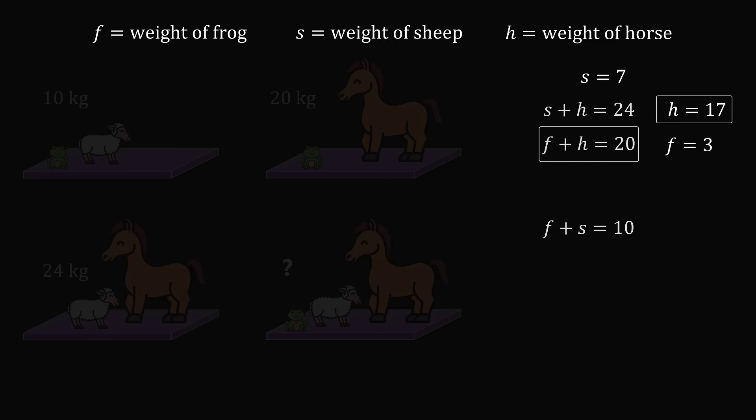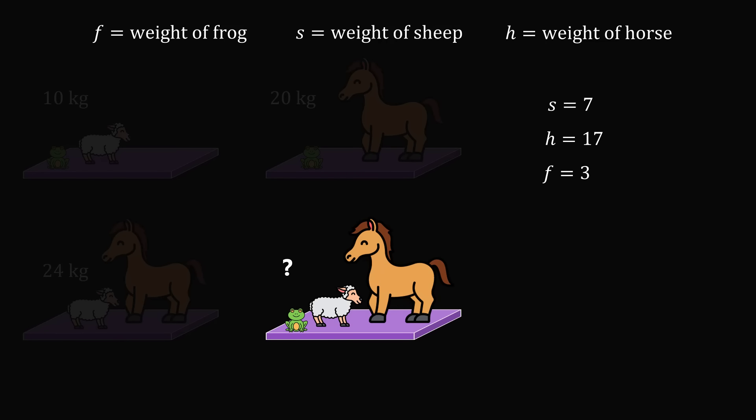So we've solved for all three values. All that remains is to solve the puzzle. We need the weight of one of each animal, which will be F plus S plus H. That is equal to 3 plus 7 plus 17, which gives the answer of 27 kilograms.